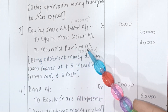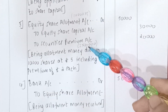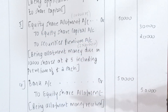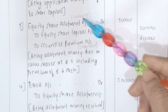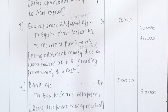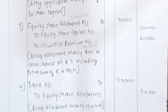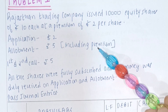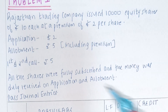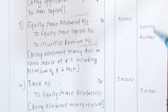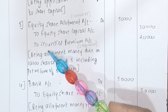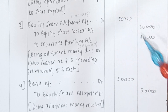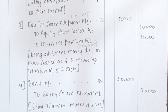Entry 3: Equity Share Allotment Account debit to Equity Share Capital Account and to Security Premium Account. There are two methods. Method 1: Securities premium = 2 × 10,000 = Rs. 20,000. Total allotment = 5 × 10,000 = Rs. 50,000. Share capital on allotment = 50,000 − 20,000 = Rs. 30,000. Method 2: Securities premium = 2 × 10,000 = Rs. 20,000. Allotment excluding premium = Rs. 5 − Rs. 2 = Rs. 3; so 3 × 10,000 = Rs. 30,000. Either method gives Share Allotment debit Rs. 50,000, Share Capital credit Rs. 30,000, Security Premium credit Rs. 20,000.